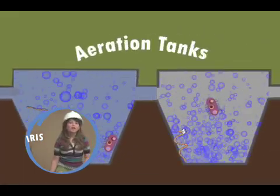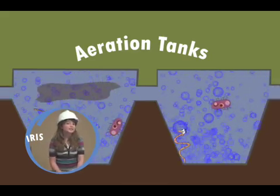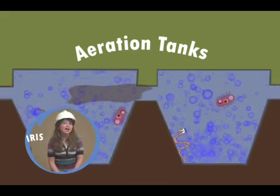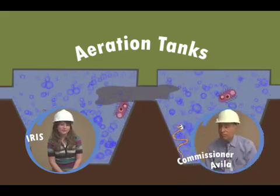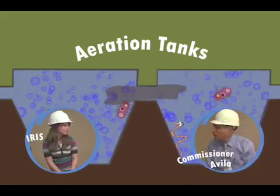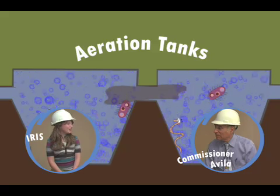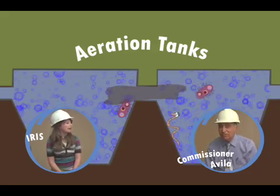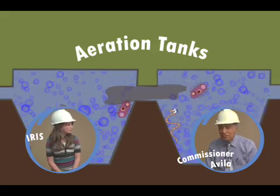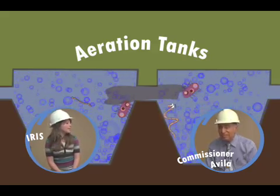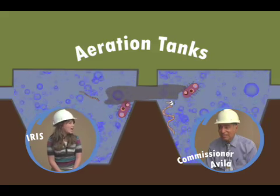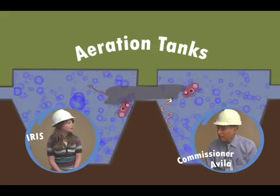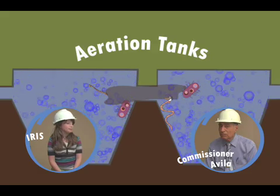The wastewater goes to the aeration tanks where they force air into water. This allows the microorganisms to... Micro what? What do they do? Hi, Commissioner! Microorganisms are the good bugs that eat up the organic material in the wastewater. This is how wastewater is cleaned by bugs eating up the germs. They help break down the solids so they can move to the solids treatment plant.